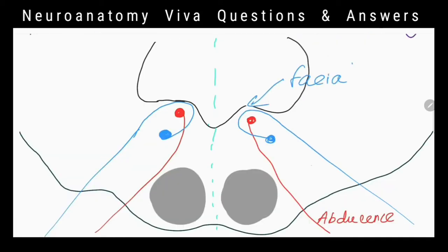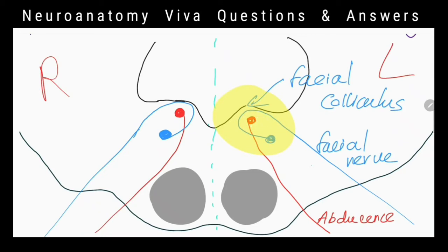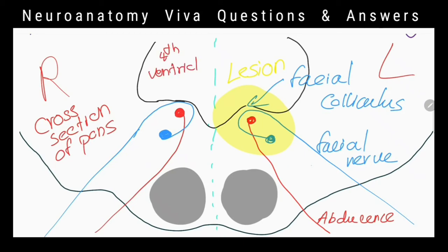If there is also weakness of muscles of facial expression on left side of this patient, what is the level of brainstem that has been injured? Caudal part of the pons at the level of facial colliculus.